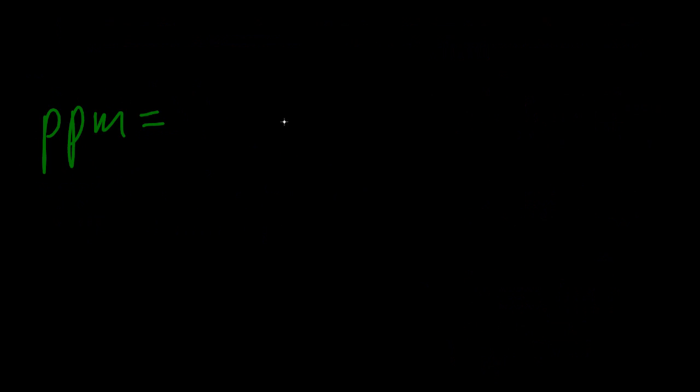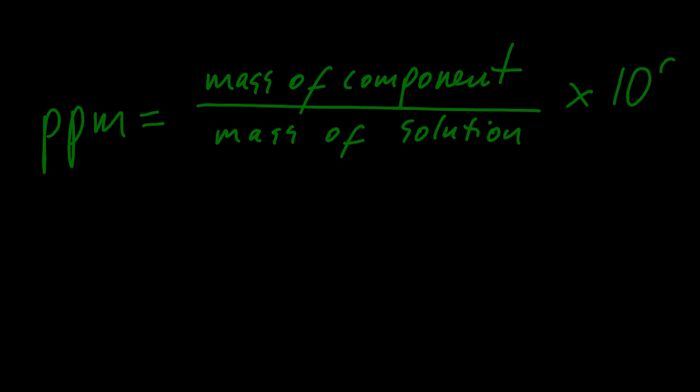Looking at the equation, parts per million is mass of component over mass of solution times a million. Or you could have volume there, don't forget. Decimeters cubed.